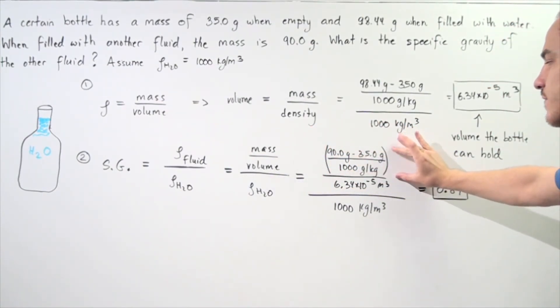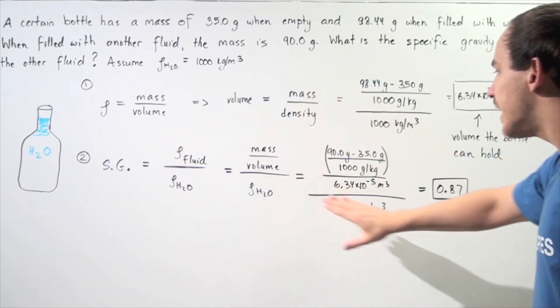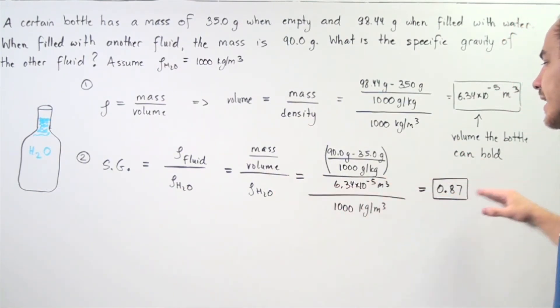So, the mass in kilograms divided by the volume that the bottle can hold, given in part A, is this quantity, and then divide that whole value by the density of water, 1,000 kilograms per meter cubed. And we get approximately a specific gravity of 0.87.